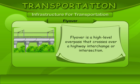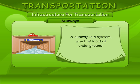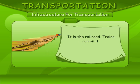Flyover. A flyover is a high-level overpass that crosses over a highway interchange or intersection. Subway. A subway is a system located underground. Railway Track. It is the railroad on which trains run.